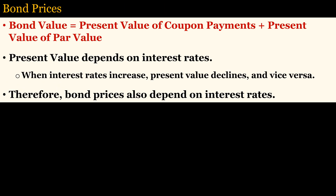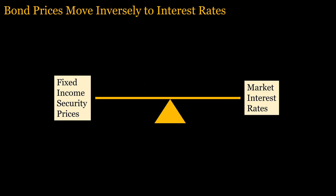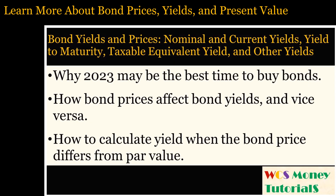To understand duration, you must understand how bond prices are determined. The value of the bond equals the present value of coupon payments plus the present value of the par value, which is received when the bond matures. Present value depends on interest rates; therefore, bond prices also depend on interest rates. The price of bonds moves inversely to interest rates — when interest rates rise, bond prices decline, and vice versa. Learn more about bond prices, yields, present value, and future value in the linked video in the description below.